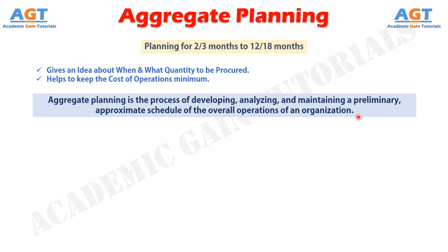The aggregate plan generally contains targeted sales forecasts, production levels, inventory levels, and customer backlogs. This schedule is intended to satisfy the demand forecast at a minimum cost. Properly done, aggregate planning should minimize the effects of short-sighted, day-to-day scheduling, in which small amounts of material may be ordered one week with an accompanying layoff of workers, followed by ordering larger amounts and rehiring workers the next week.